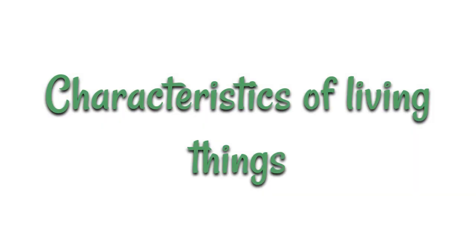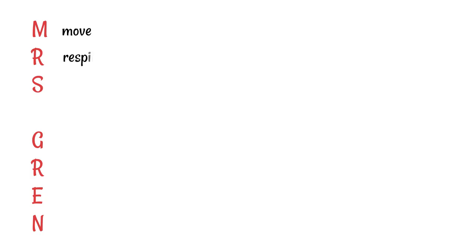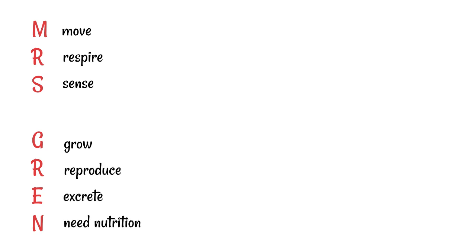We assign specific characteristics to living things, and all living things share these seven specific characteristics. To remember what they are, we use the mnemonic MRS GREN. All living things move, they can respire, they can sense, they can grow, they can reproduce, they can excrete, and they all need nutrition.